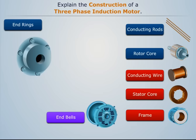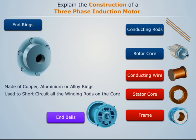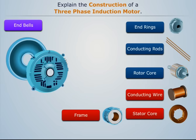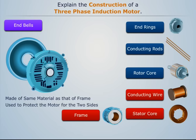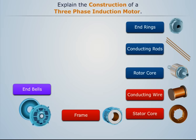The end rings are made up of copper, aluminum, or alloy rings and are used to short circuit all the winding rods on the core. The end bells are made of the same material as that of the frame and are used to protect the motor from the two sides. Now let's construct a three-phase induction motor using these elements.